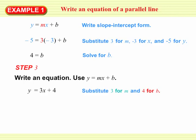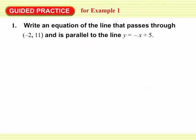So the line y equals 3x plus 4 is parallel to the given line and passes through the point negative 3 comma negative 5. Next, I'll give you a similar problem. Please pause this presentation and try it; when you resume, it will walk you through the steps.